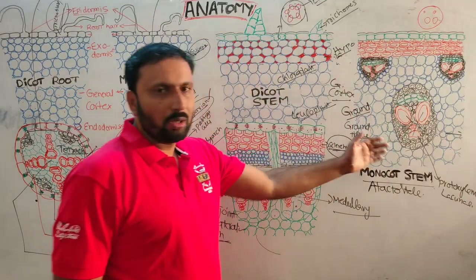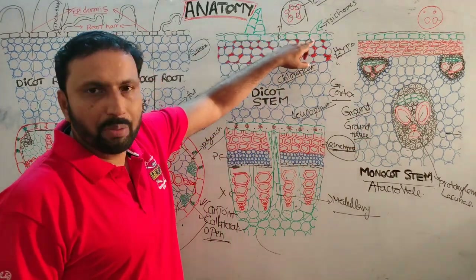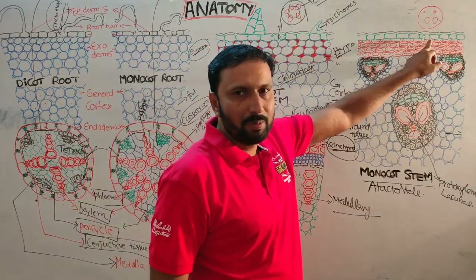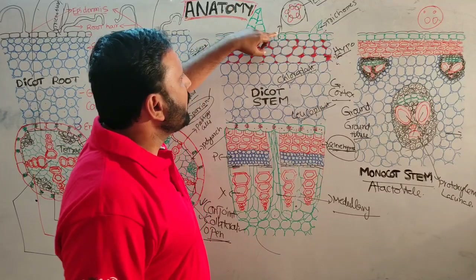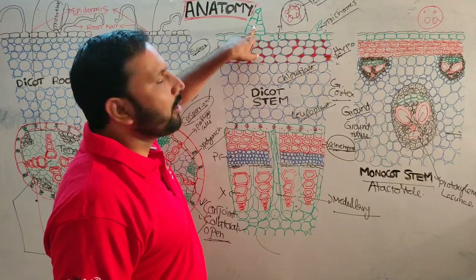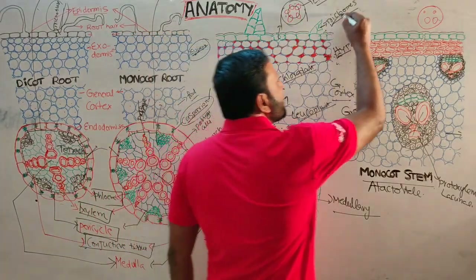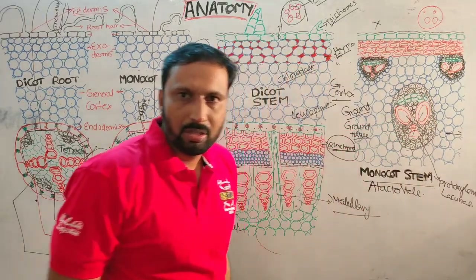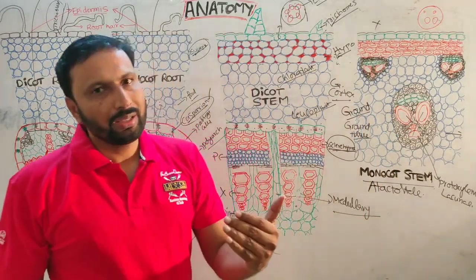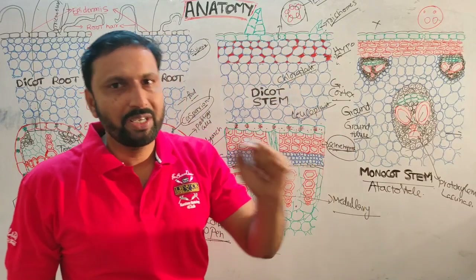Now moving to dicot stem and monocot stem. In the epidermis, cells are rectangular shaped. Stomata are present in both. The epidermis is surrounded by a cuticle in both. In dicot stem, some epidermal cells form hair-like structures called trichomes, which are absent in monocot stem.